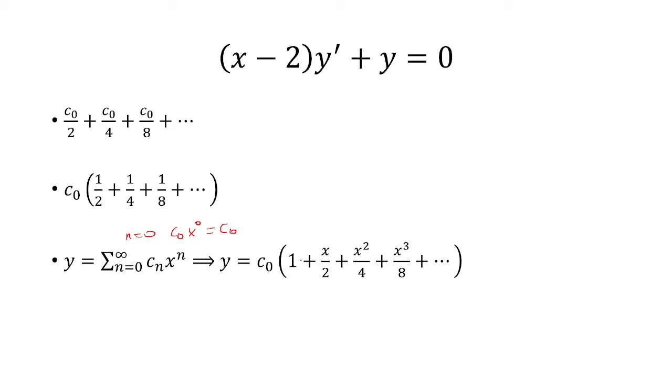Okay, so that's when n equals 0. This was when n equals 1, n equals 2, n equals 3. So this is my sum, and so I can rewrite this in terms of y equals c sub 0 all over x minus 2.